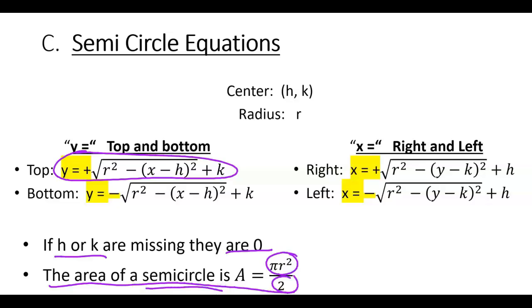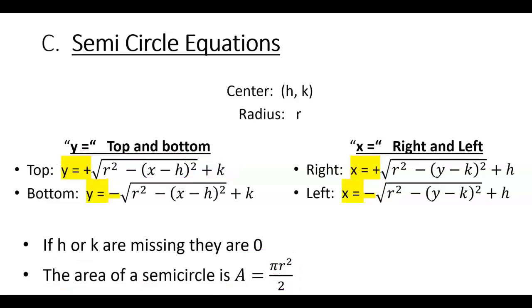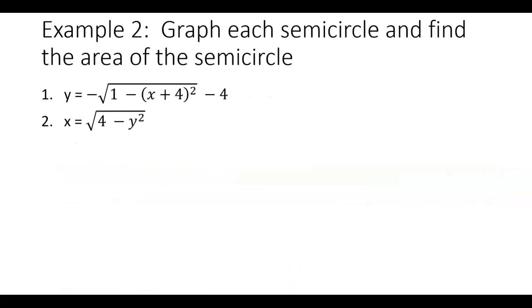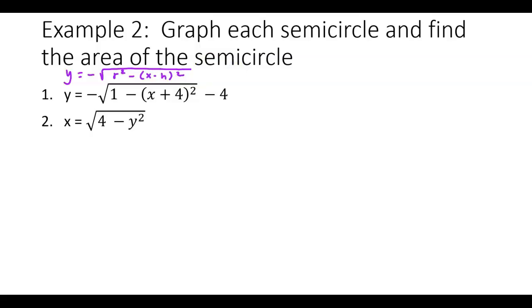A half circle is also referred to as a semicircle. Let's jump into example two. This is a y equals negative square root of r squared minus (x minus h) squared, plus k.